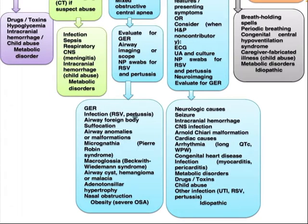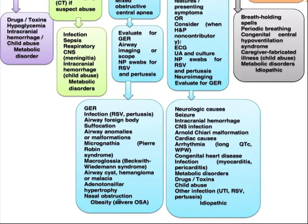Differential diagnosis in this scenario may include GERD, infection such as RSV or pertussis, airway foreign body, suffocation, airway anomaly or malformation such as micrognathia, Pierre Robin syndrome, macroglossia, Beckwith-Wiedemann syndrome, airway cyst, hemangioma or malacia, adenotonsillar hypertrophy, nasal obstruction, and obesity — which in severe cases may cause obstructive sleep apnea.